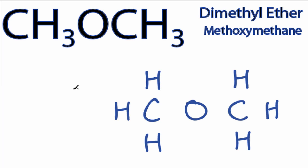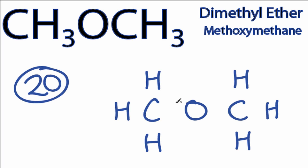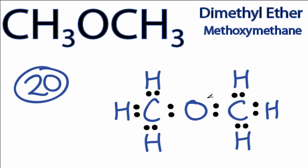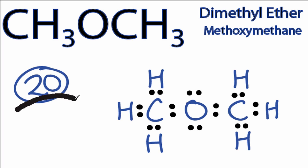For the CH3OCH3 Lewis structure, we have a total of 20 valence electrons. We'll put 2 between the atoms to form chemical bonds, so we've used 16, and we'll put the last 4 on the center oxygen to complete its octet. So we've used all 20 valence electrons.